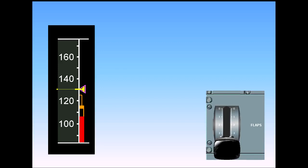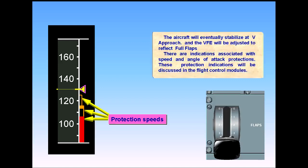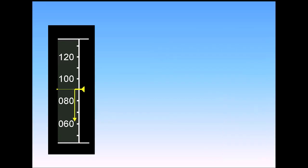There are indications associated with speed and angle of attack protections. These protection indications will be discussed in the flight control modules. Once the aircraft lands, all additional speed indications are removed, except for the speed trend arrow. Having thoroughly studied the airspeed indications, let's look at altitude indications.